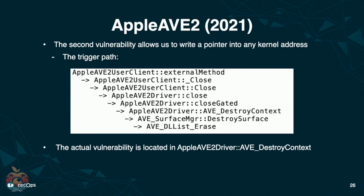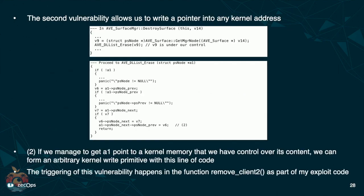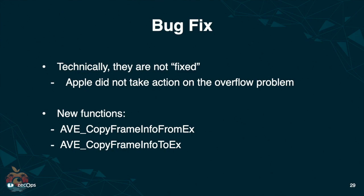And here is the second vulnerability and its triggering path. It's a race condition problem — leverage the new data structure. Then we talked about how these bugs are being fixed. Technically, they have not been fully fixed. Apple didn't take action on the overflow problem; they didn't add a size or boundary check. But something else they did this time effectively solved the race condition problem. They added a buffer between the use of the mapped memory.